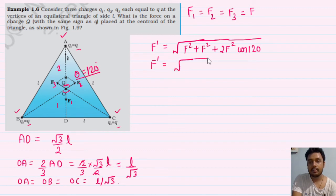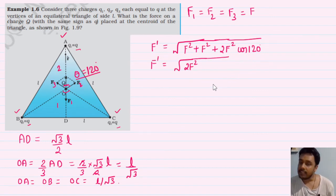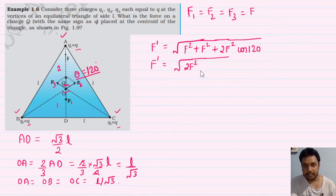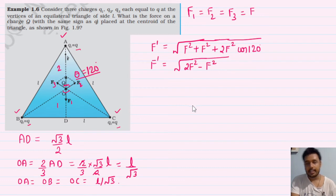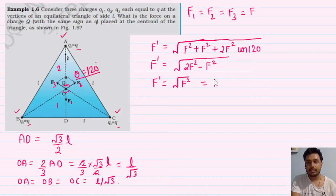F dash = √(F² + F² + 2F²·cos120°)। cos120° = cos(90+30) = −sin30 = −1/2। तो under root of 2F² − F² = F। तो इनका resultant भी F के बराबर आ गया।